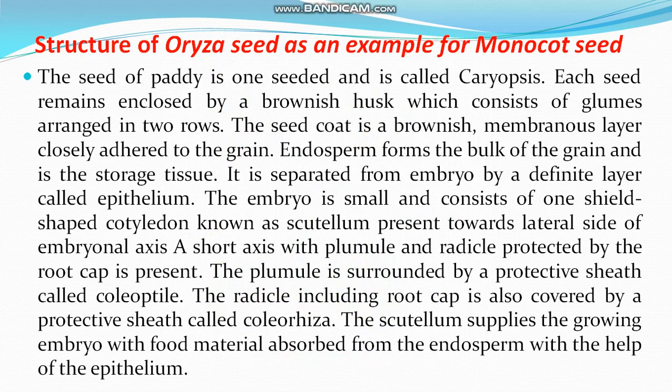The structure of an Oryza seed is an example for a monocot. The seed of paddy is one-seeded and is called a caryopsis — it is actually a fruit, not a seed. Each seed remains enclosed by a brownish husk arranged in two rows. The seed coat is a brownish membranous layer closely adhered to the grain. Endosperm forms the bulk of the grain as the storage tissue and is separated from the embryo by a definite layer called the epithelium.